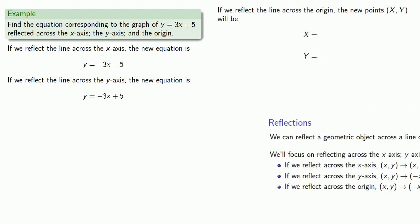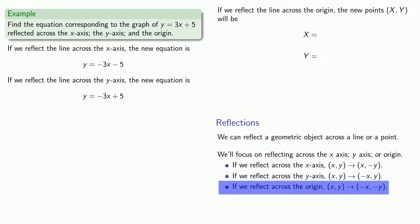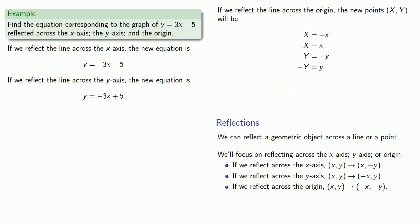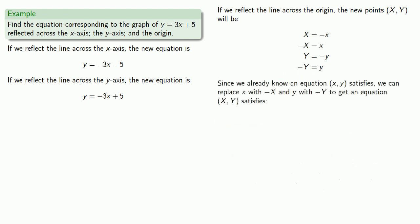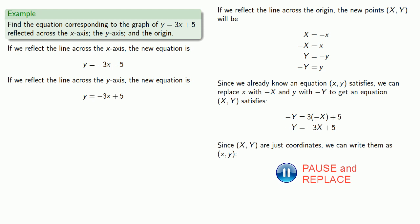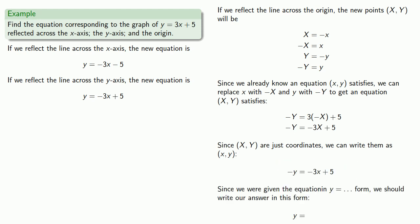Finally, if we reflect the line across the origin, the new coordinates will be (negative x, negative y). Solving for x and y, then substituting and replacing, we get our new equation. We'd like to write the answer in the same form the question was given, so we'll solve for lowercase y.